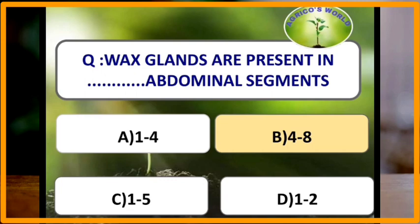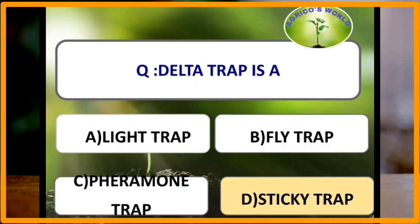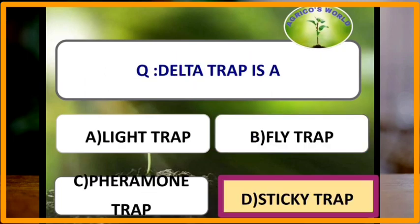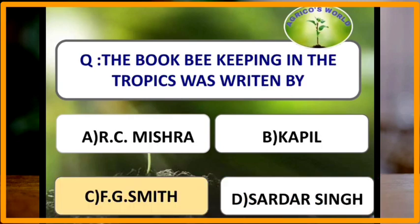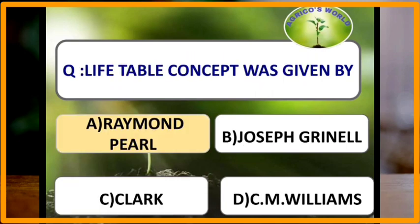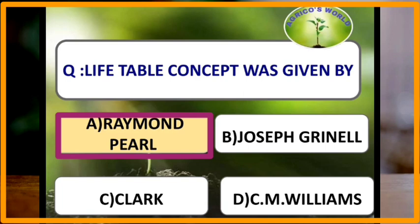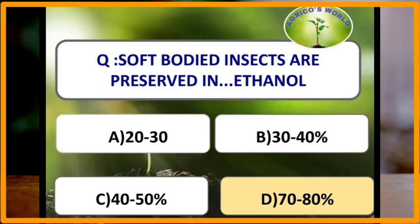Wax glands are present in the fourth to eighth abdominal segments of insects. Delta trap is a sticky trap. The book 'Beekeeping in the Tropics' was written by F.G. Smith. The life table concept was given by Ramon Pearl.